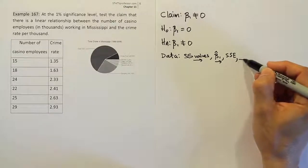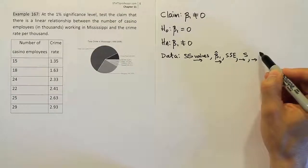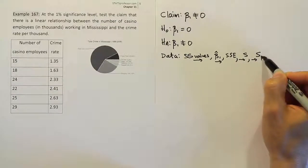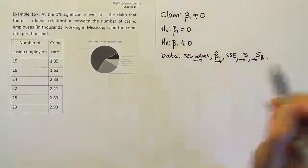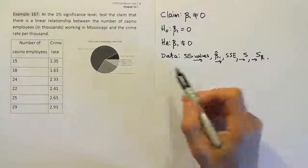Once you have that, you're going to move on to end up getting the S value. And then once you have that, you're going to move on to finally the S β₁ hat. And that's the end of the data step. That'll basically give us enough to work out our test statistic.